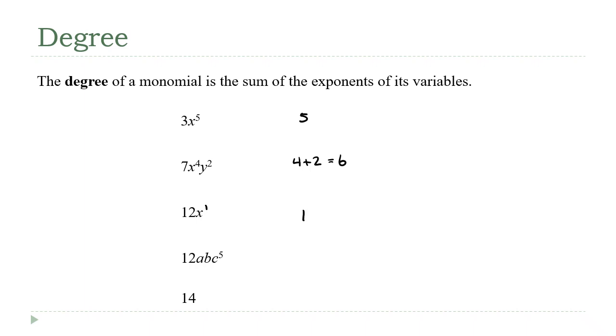And that makes the next one down here—the exponent of the a is a one, the b is a one, the c is a five—and the degree is going to be seven. All right, how about this last one here? There's no variable. How can we talk about the exponent of a variable if there isn't one?